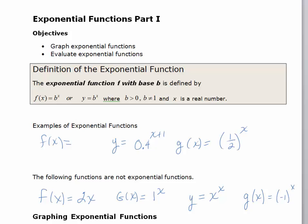Some examples of exponential functions are: f(x) equals 2 to the x, y equals 0.4 to the x plus 1, and g(x) equals 1 half to the x. These are all exponential functions. This first one, the value of b is greater than 1, and in the last two, the value of b is less than 1, but all the bases are positive.